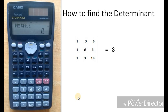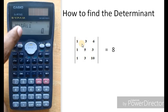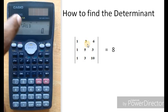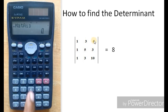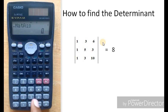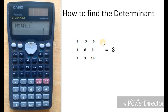Now enter the actual values of matrix A. A11 means first row and first column — enter 1, equals. First row, second column — enter 3, equals. First row, third column — enter 6, equals. Continue entering all values of the matrix: 1, 5, 3, 1, 3, and 10, pressing equals after each entry.